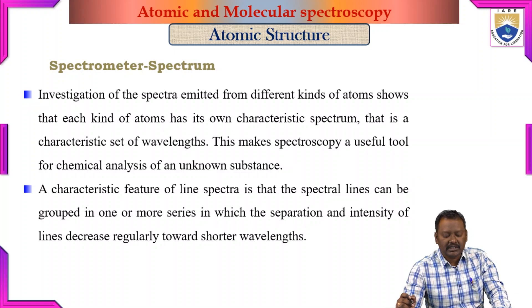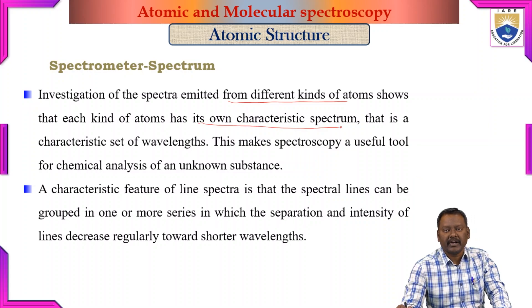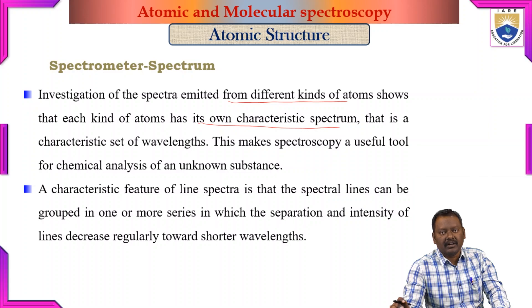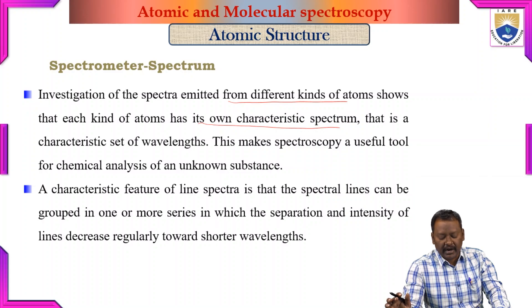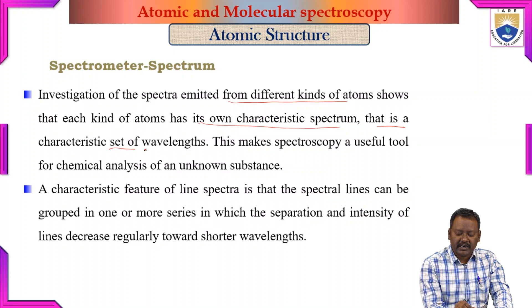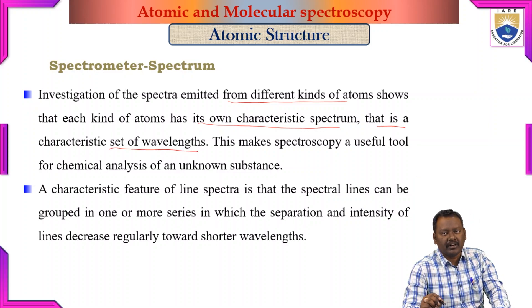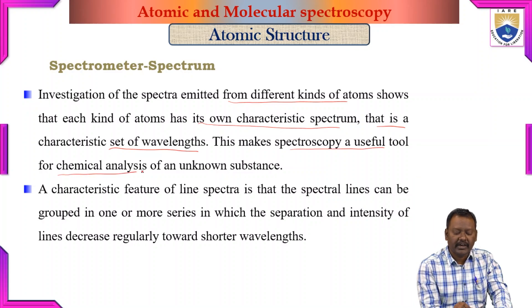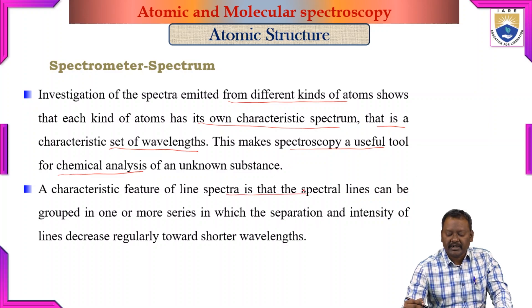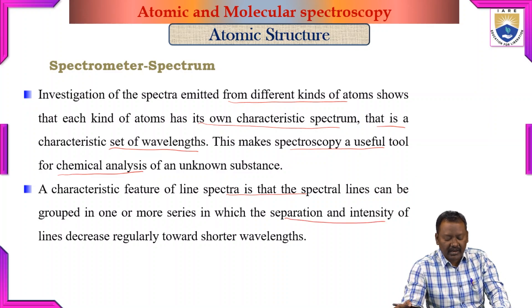On investigation of the spectra emitted from different kinds of atoms, each kind of atom has its own characteristic spectrum. For a single-atom gas, we can get a particular characteristic spectrum — it is like a fingerprint of that particular atom. That characteristic set of wavelengths with lines at particular positions makes spectroscopy a useful tool for chemical analysis of unknown substances. A characteristic feature of line spectra is that spectral lines can be grouped into series in which the separation and intensity of lines decrease regularly towards shorter wavelengths.